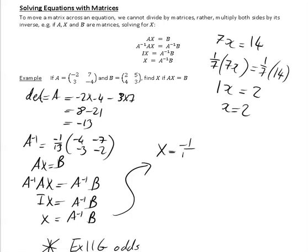So X is equal to -1/13 times (-4, -7; -3, -2). And your B, what was your B? Your B was (2, 5; 4, 3).